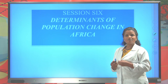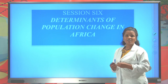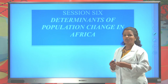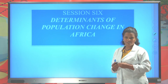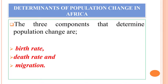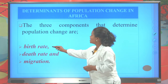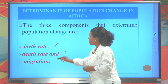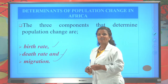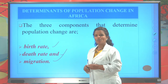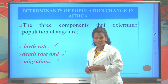When we see population distribution in Africa, fertility rate is very high, so growth rate and rate of natural increase in Africa is very high. Today, let us see determinants of population change in Africa. The three components that determine population change are birth rate, death rate, and migration.